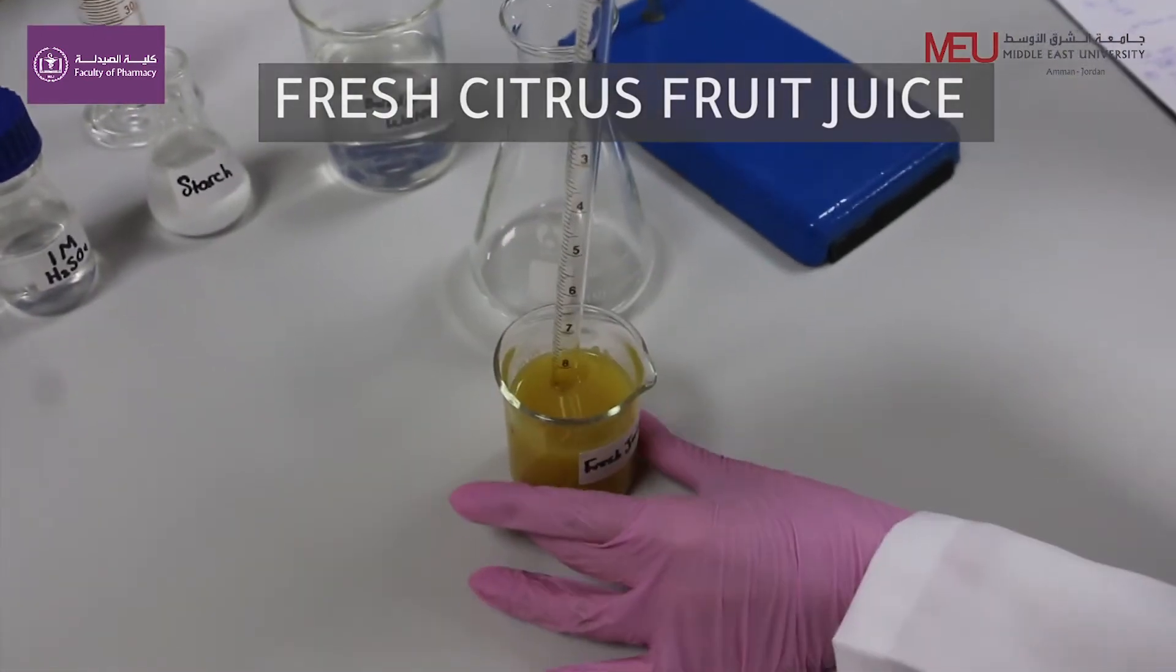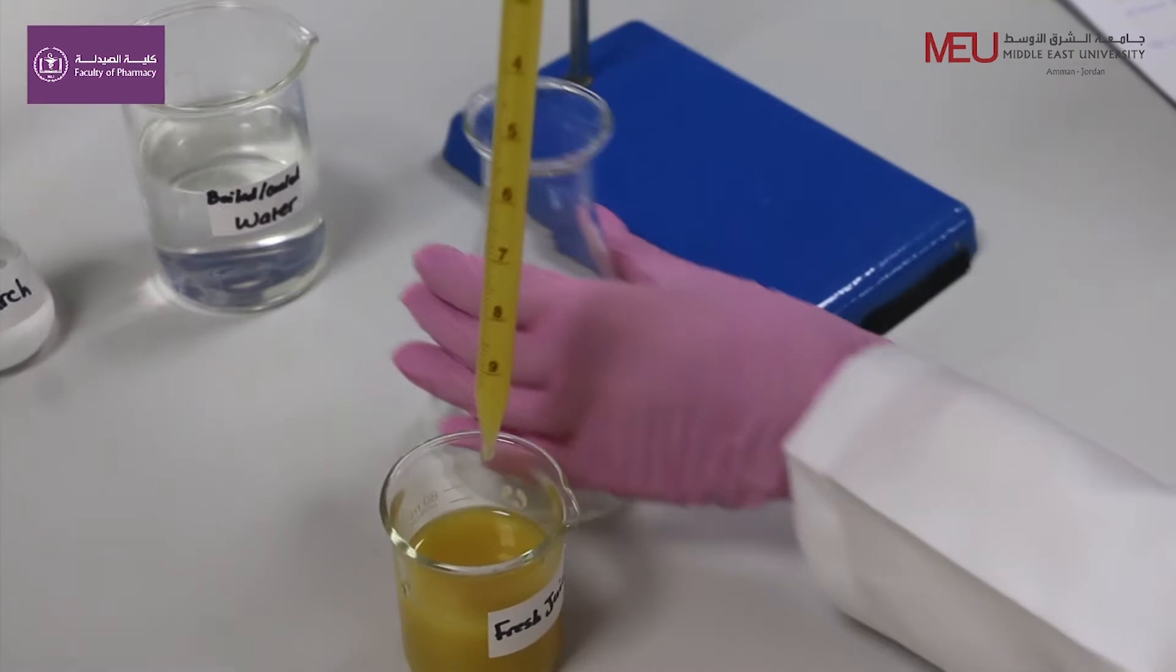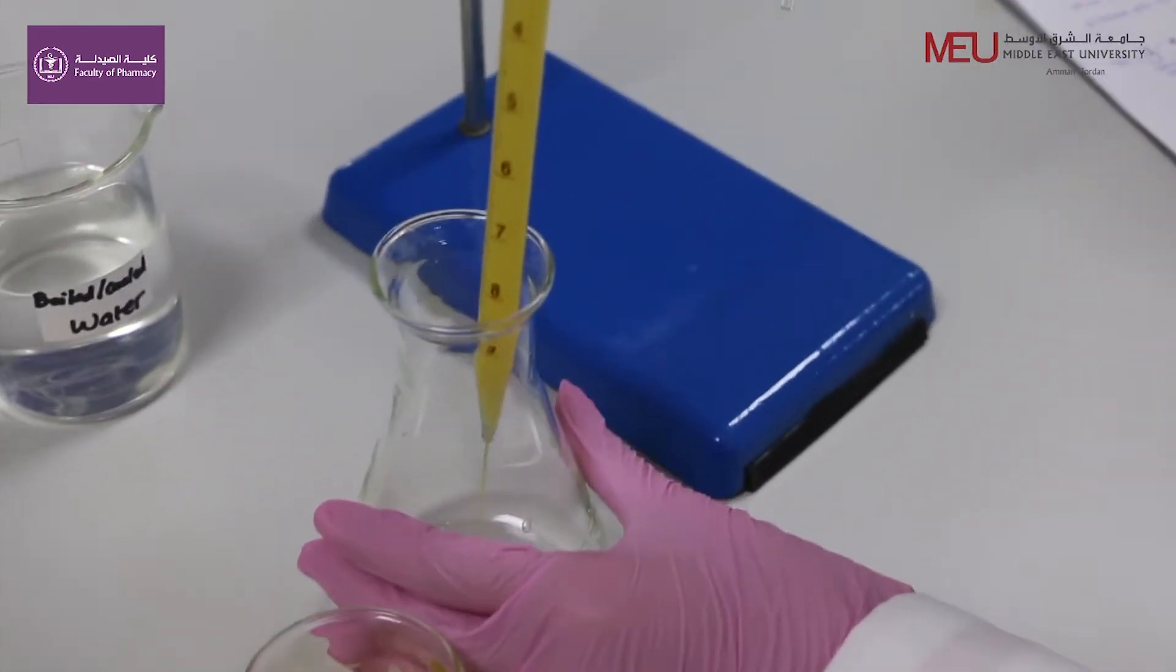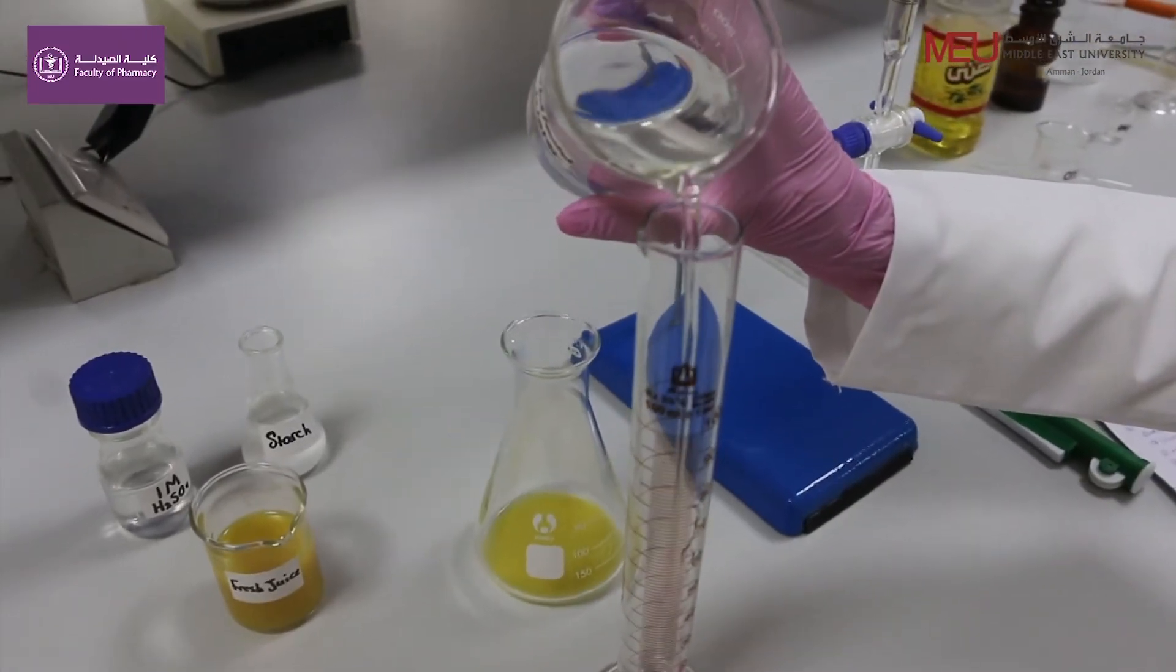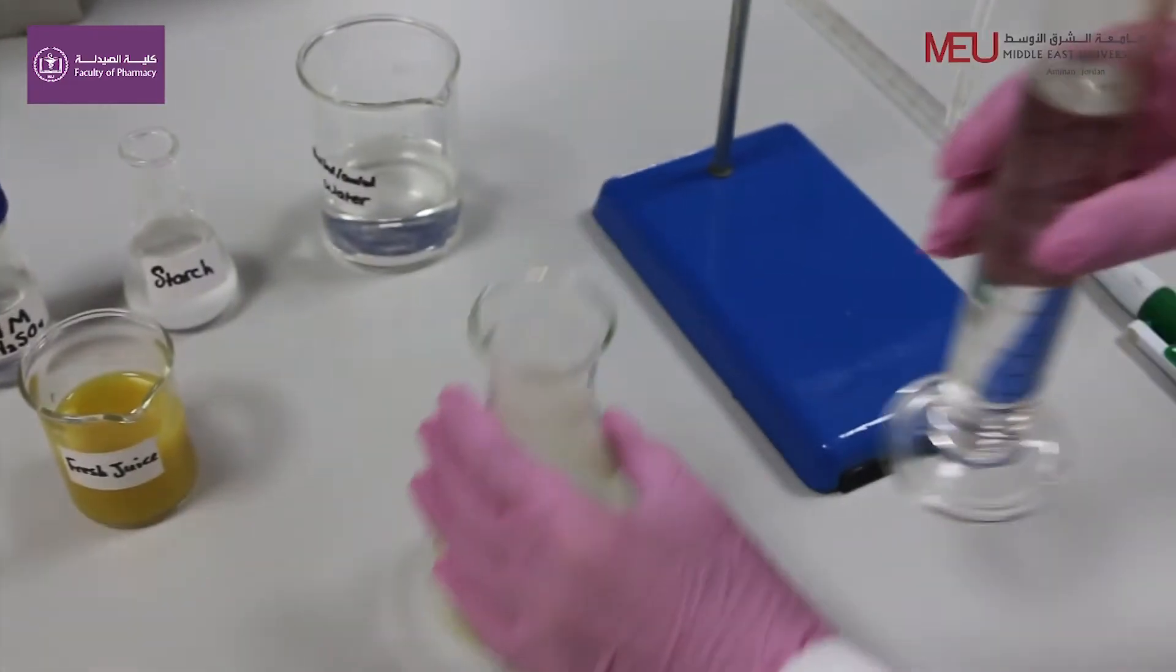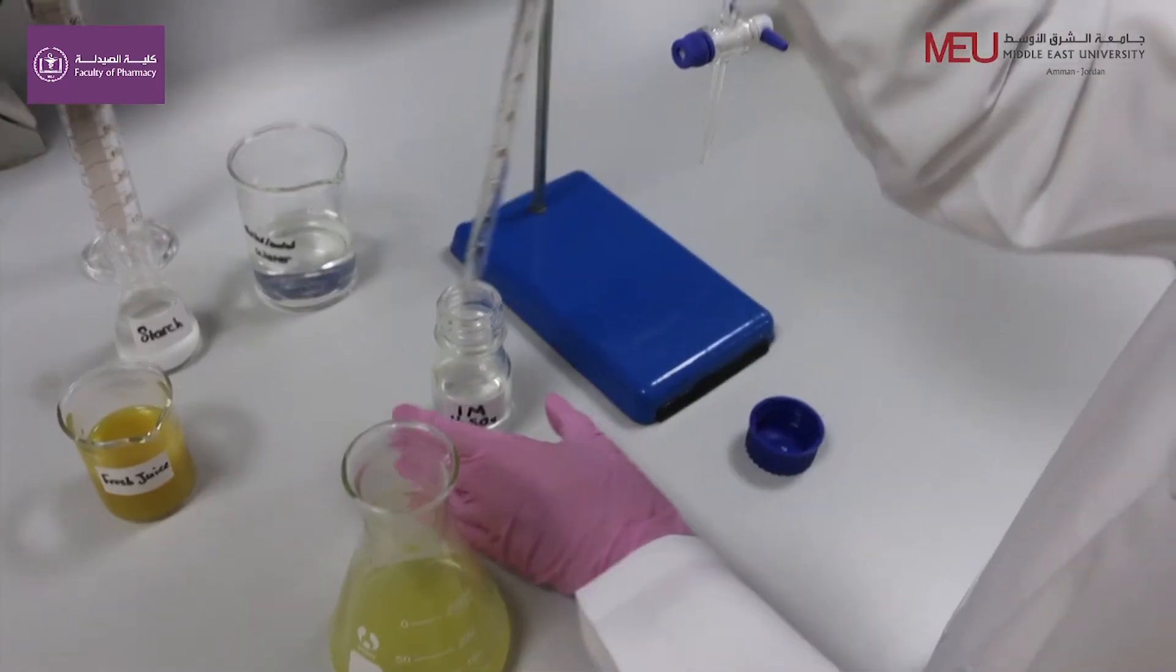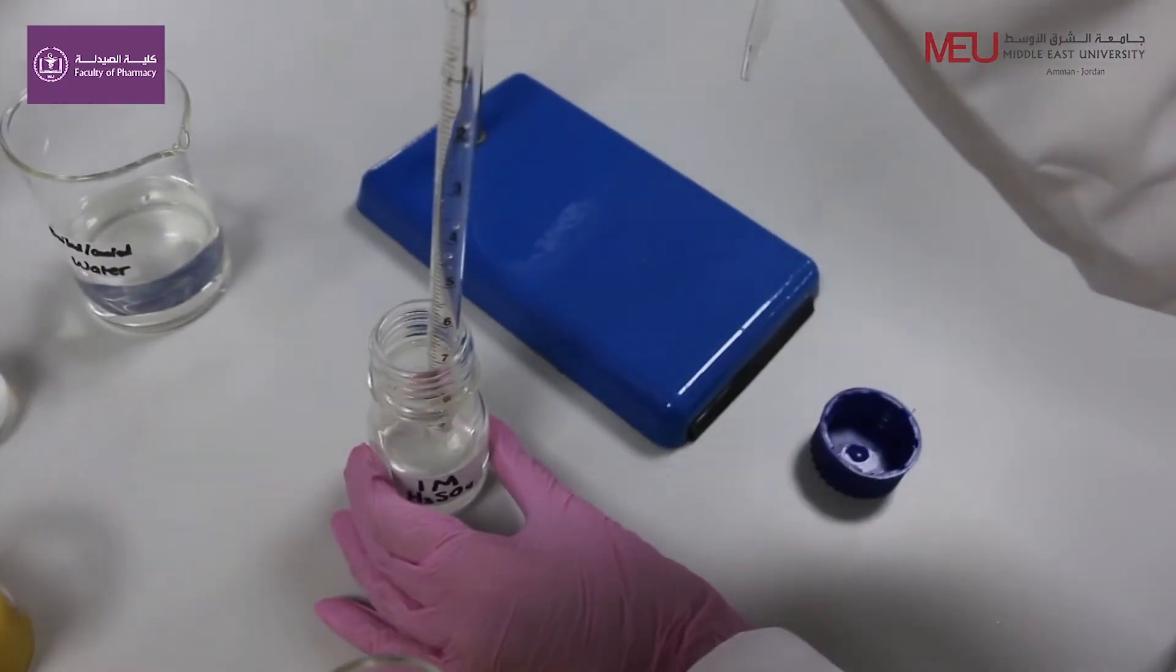Take 10 ml of the fresh juice. Add 80 ml of freshly boiled and cooled water. Add 10 ml of 1 molar H2SO4.